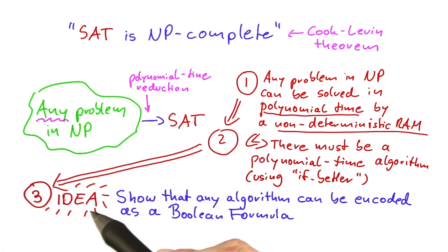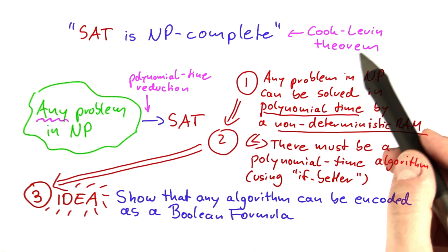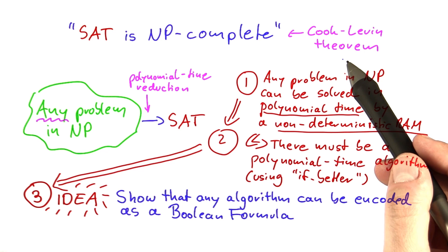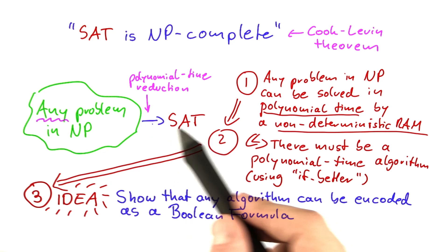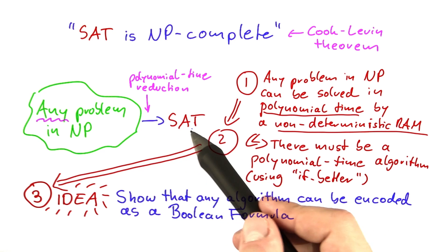Which brings us to the third point, and that is the main idea that Cook and Levin had. Instead of having to show that any problem in NP can be encoded as a Boolean formula, what they did is they showed that any algorithm can be encoded as a Boolean formula.